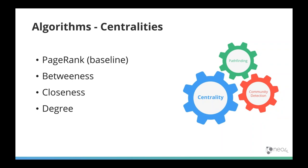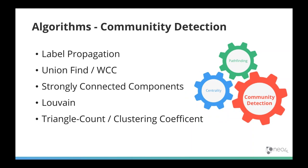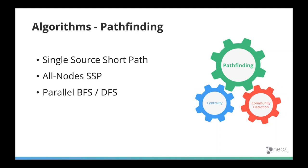Under centrality we currently have page rank, betweenness, and closeness — degree can actually be computed directly in Cypher. Community detection includes label propagation, union find (also called weakly connected components), strongly connected components, Louvain, and triangle count with clustering coefficient — each capturing different metrics of a community depending on the domain. For path finding, some algorithms are available in Cypher directly, but these library versions are optimized to run in parallel, so they're often faster. We have single source shortest path, all-nodes shortest path, and parallel breadth and depth first searches.